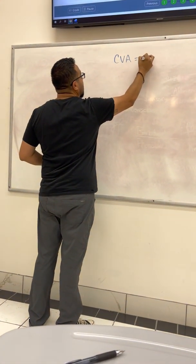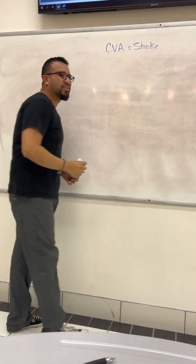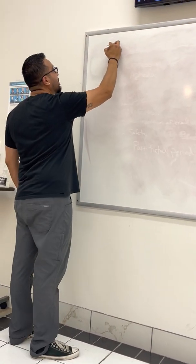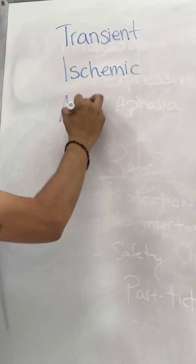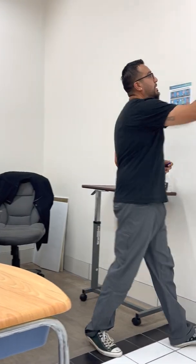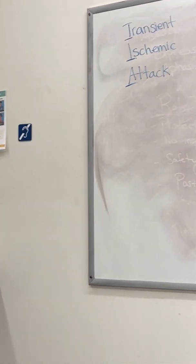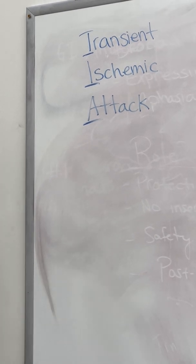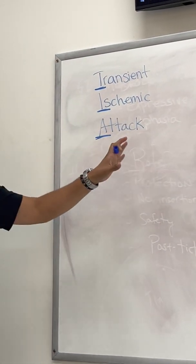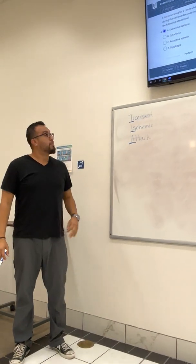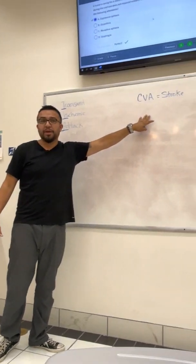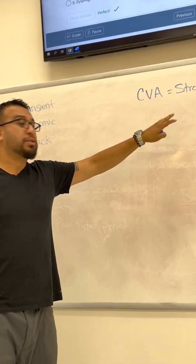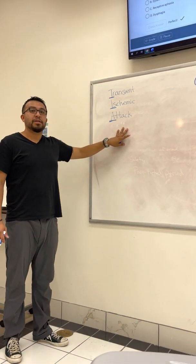This is CVA — Cerebrovascular Accident — we're talking about a stroke. You should also know that there's something that precedes a stroke: it's called a Transient Ischemic Attack, your TIA. In a TIA, this is temporary ischemia to the brain that manifests like a stroke, but the main difference is that there's no necrosis of the tissue, so the patient regains their function a lot faster than they do with an actual CVA.